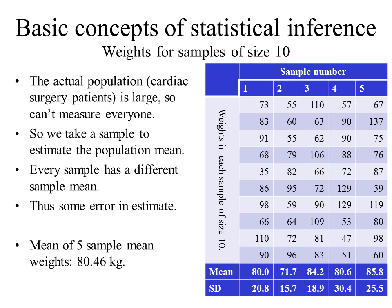Using the stats package STATA, I've taken five samples, each of size 10, from the cardiac surgery database. As you can see, the mean and the standard deviation of each group is slightly different. In sample four, there's a weight of 57 and two weights of 129, so the mean is 80.6 but the standard deviation is 30.4.